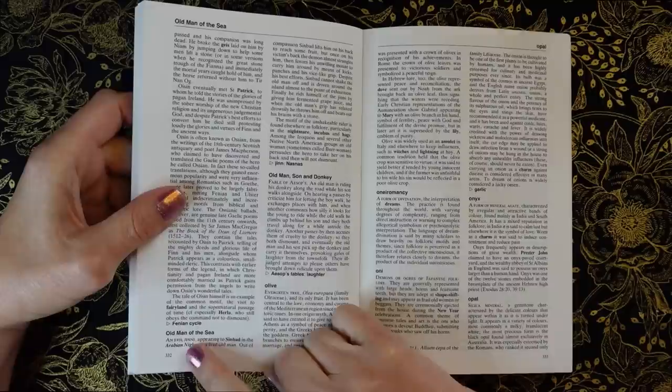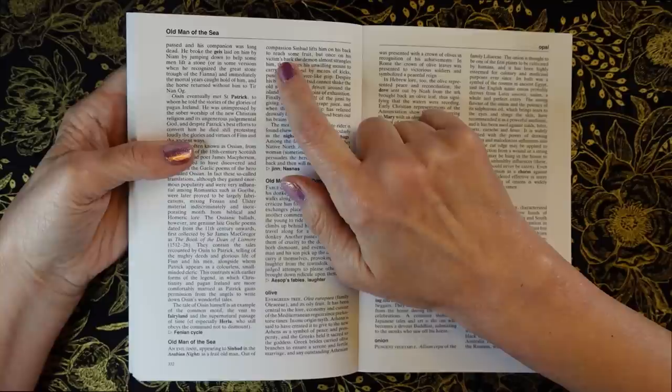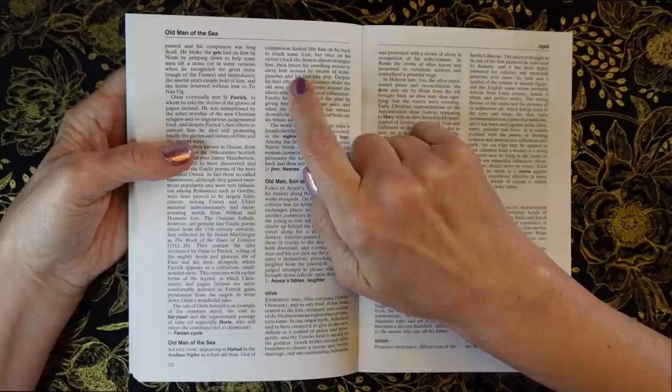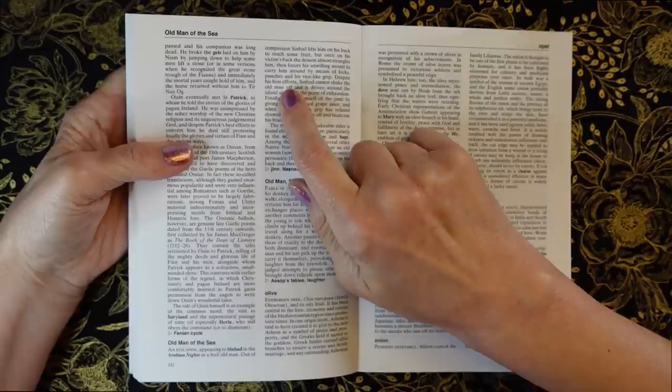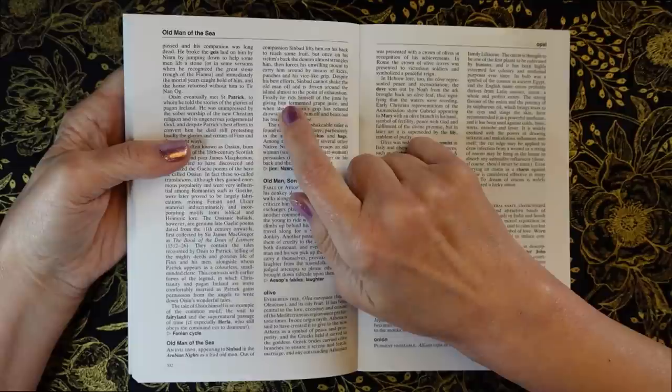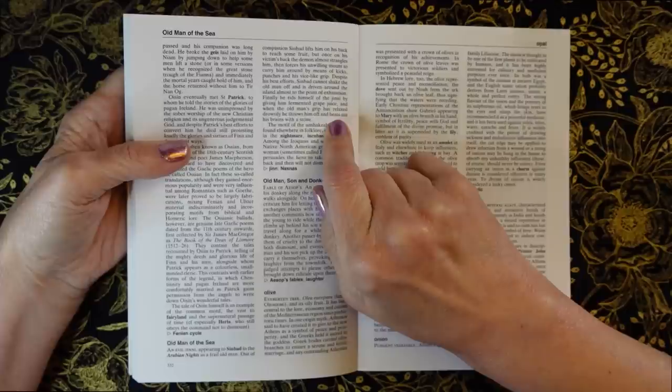Old man of the sea, an evil djinn, appearing to Sinbad in the Arabian Nights as a frail old man. Out of compassion, Sinbad lifts him on his back to reach some fruit, but once on his victim's back, the demon almost strangles him, then forces his unwilling mount to carry him around by means of kicks, punches, and his vice-like grip. Despite his best efforts, Sinbad cannot shake the old man off, and is driven around the island almost to the point of exhaustion. Finally, he rids himself of the jinn by giving him fermented grape juice, and when the old man's grip has relaxed drowsily, he throws him off and beats out his brains with a stone.